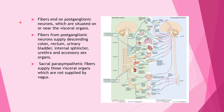Fibers end on postganglionic neurons situated on or near the visceral organs. Fibers from the postganglionic neurons supply the descending colon, rectum, urinary bladder, internal sphincter, urethra, and accessory sex organs. Sacral parasympathetic fibers supply those visceral organs not supplied by the vagus nerve.